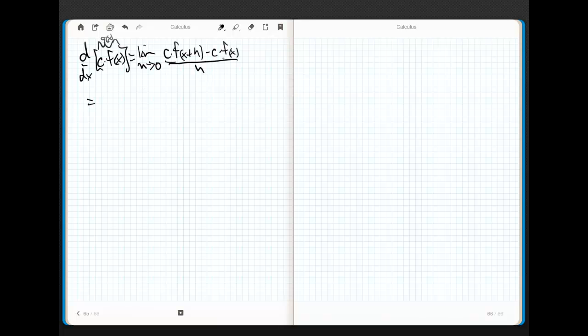Now this is equal to, look, what do you notice there? I've got a constant. This is the limit as h goes to zero of the constant times f of x plus h minus f of x all over h. If I suck the constant out,